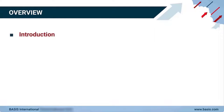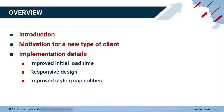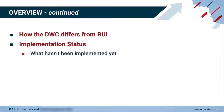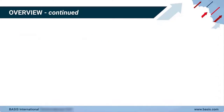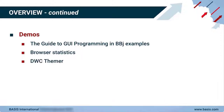After the introduction, we'll cover Basis' motivating factors that compelled us to write a brand new client. We'll look at several implementation details, including how we improved initial load time, facilitated responsive design, improved styling capabilities, and promoted extensibility. We'll then cover how the new client differentiates itself from BUI, and list which controls are ready for use and which controls the new client won't support. Then we'll run a few demos, including legacy examples from the Guide to GUI Programming and BBJ document, and examine low-level network traffic statistics to analyze initial load time characteristics. Then we'll take a sneak peek at the DWC Themer app and use it to generate a theme that will apply to a sample application.